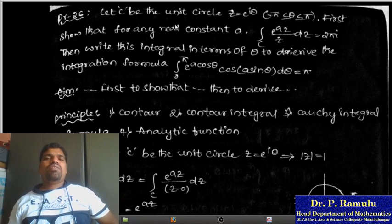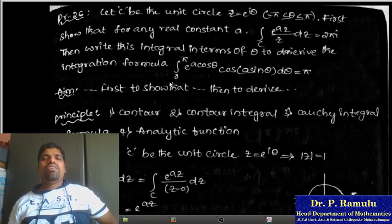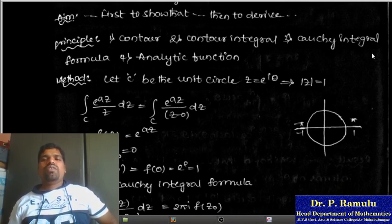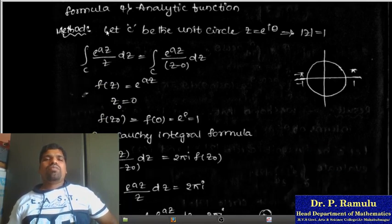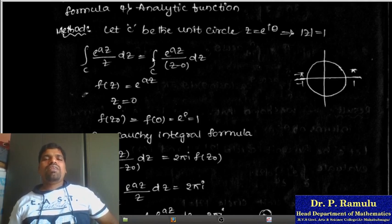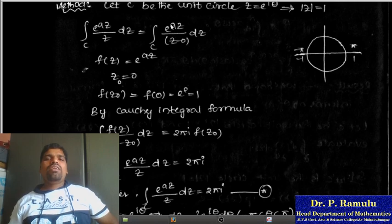First you have to show this result, then rewrite the integral formula using the contour integral Cauchy integral formula and analytic function method. Let C be the unit disk, z = e^(iθ), mod z = 1. I am taking the integration over C of e^(az)/z dz, which equals integration of e^(az) / (z - 0) dz. I want to make this in the form of the Cauchy integral formula, where f(z) = e^(az) and z₀ = 0.